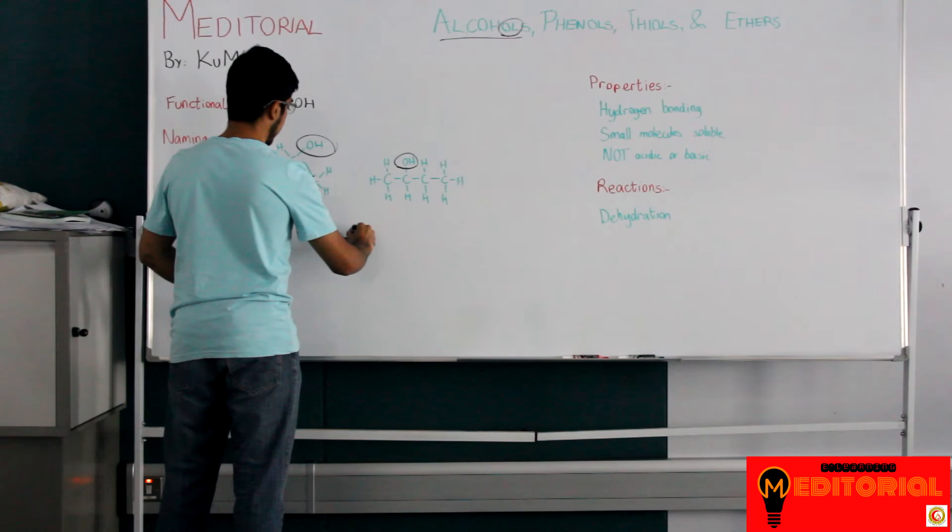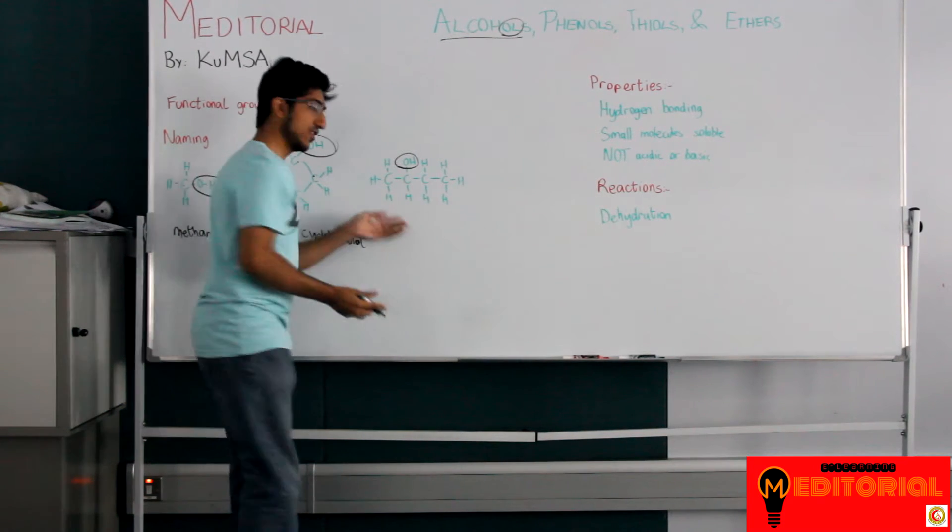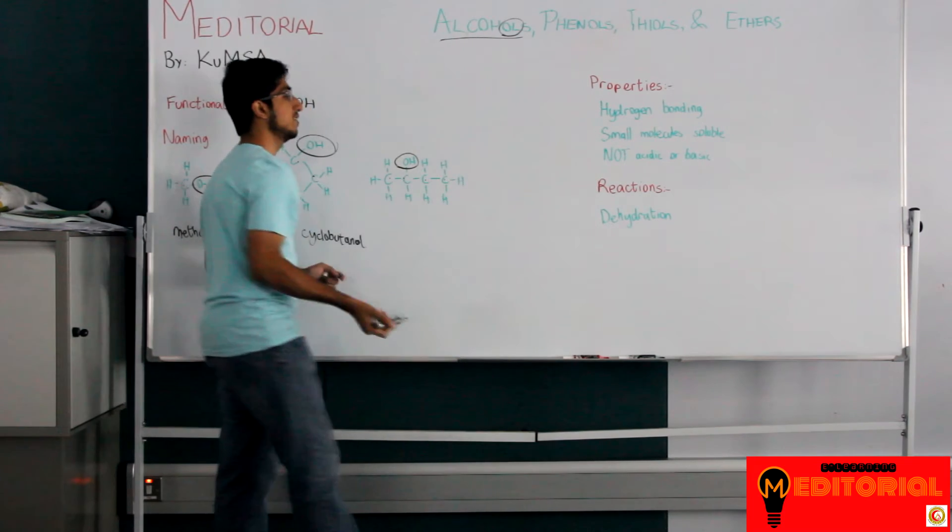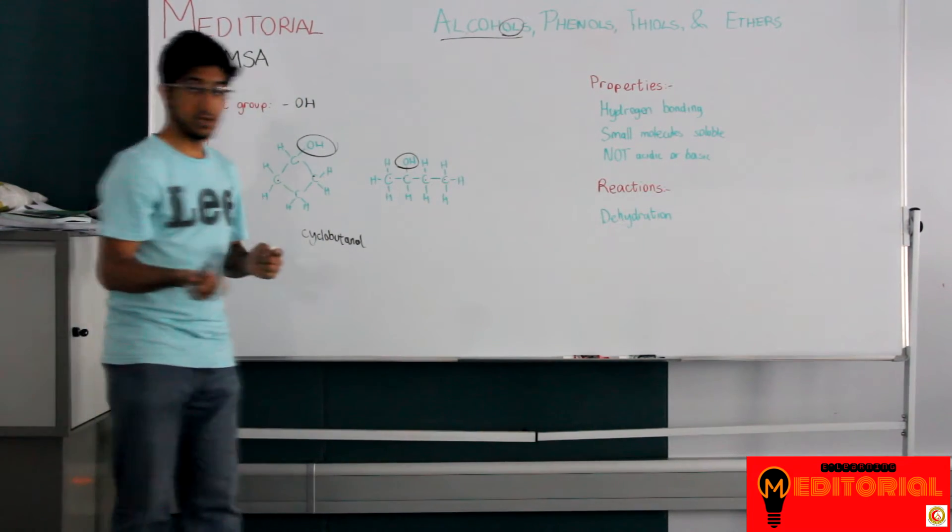Cyclobutanol. What about this one? This one is also one, two, three, four carbons, but in a straight chain. So it's butanol. It's not cyclic, it's in a straight chain.